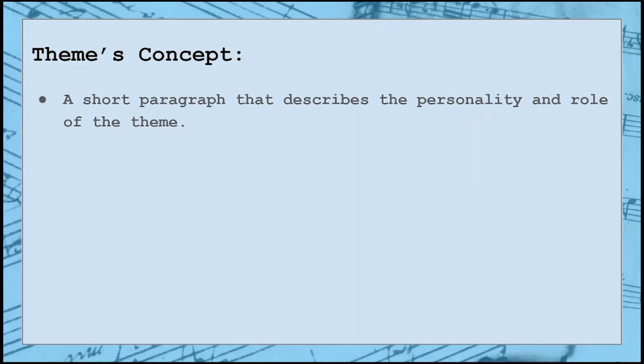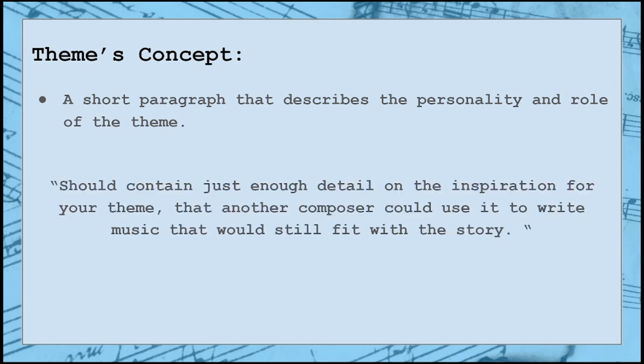Keeping this information in mind, I want to write a quick concept for my theme. A theme's concept is just a short paragraph that describes the personality and role of the theme. The golden rule behind this description is that it should contain just enough detail on the inspiration for your theme that another composer could use it to write music that would still fit with the story. This is a really important step because this paragraph will serve as a reminder of what your music needs to accomplish. While you're actually writing the theme, it can be very easy to just get lost down a long rabbit hole of different ideas that sound good to you, but just don't serve the story. If you're not careful, you can end up spending hours writing beautiful music that just won't work for the film you're working on. Having this paragraph on standby helps ensure that you have a constant reminder of what exactly your music needs to accomplish.